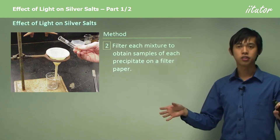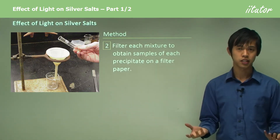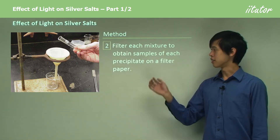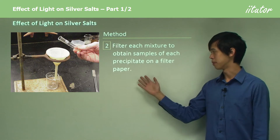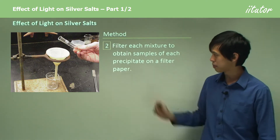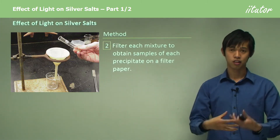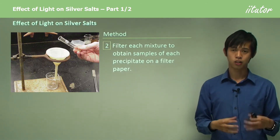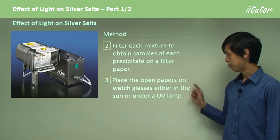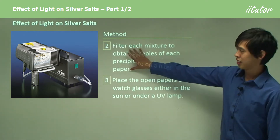Next, we take the two solutions we've made, which now contain all this precipitate. To extract the precipitate, we filter each mixture to obtain samples on filter paper. We pour it through the filter paper and the silver chloride or silver bromide will be retained in the filter.